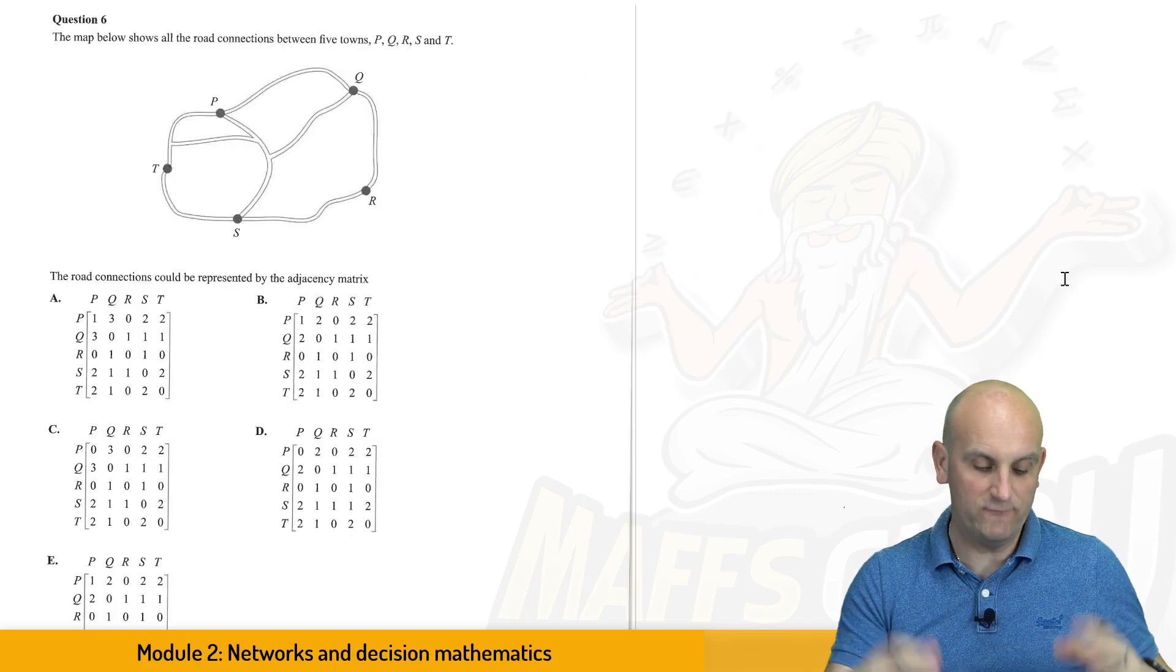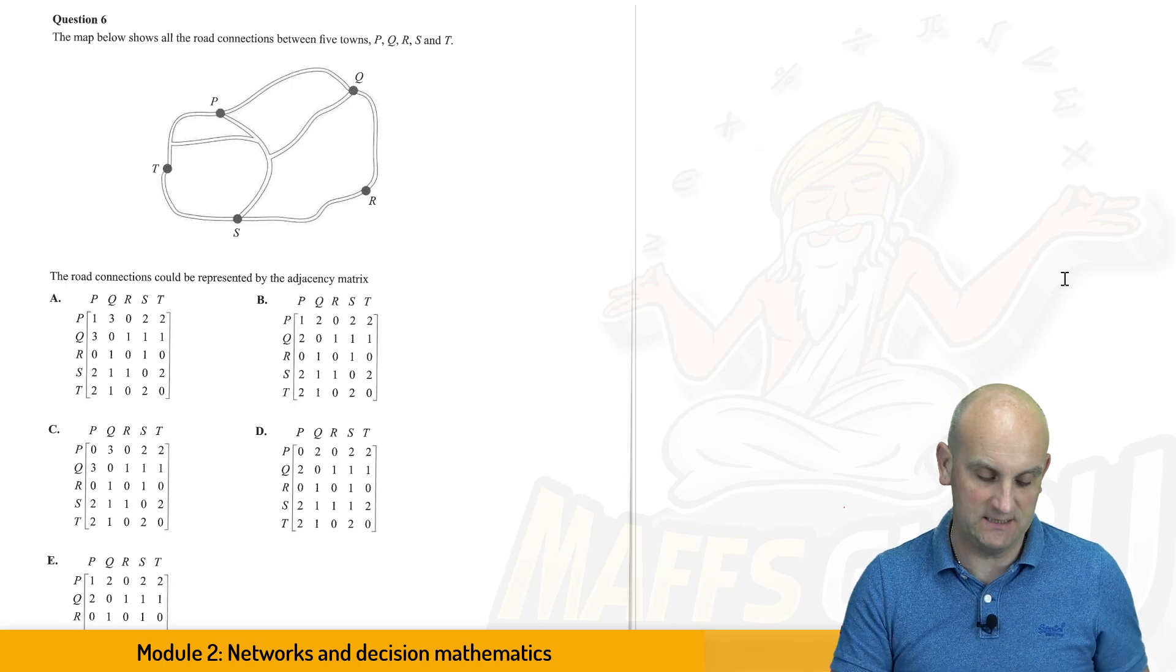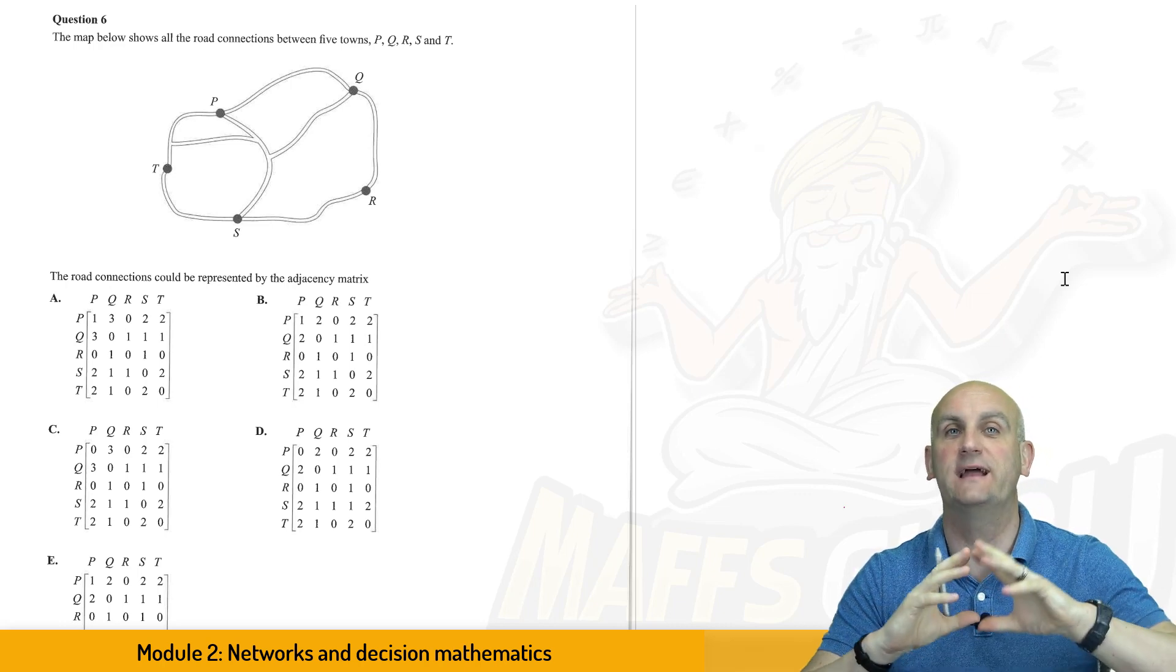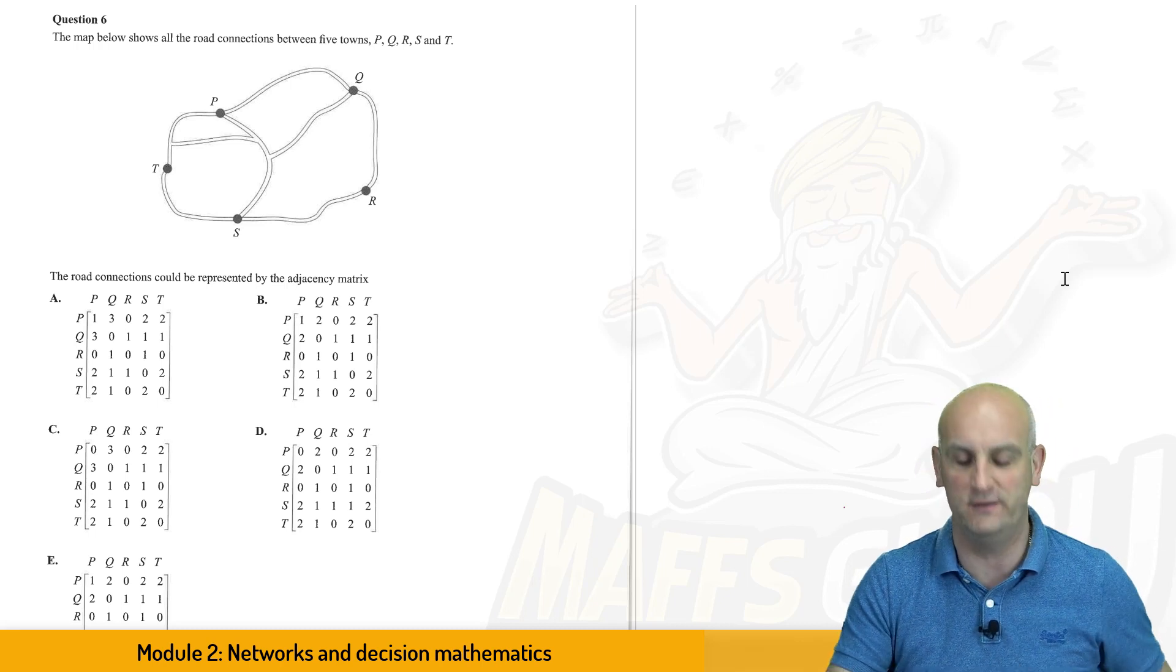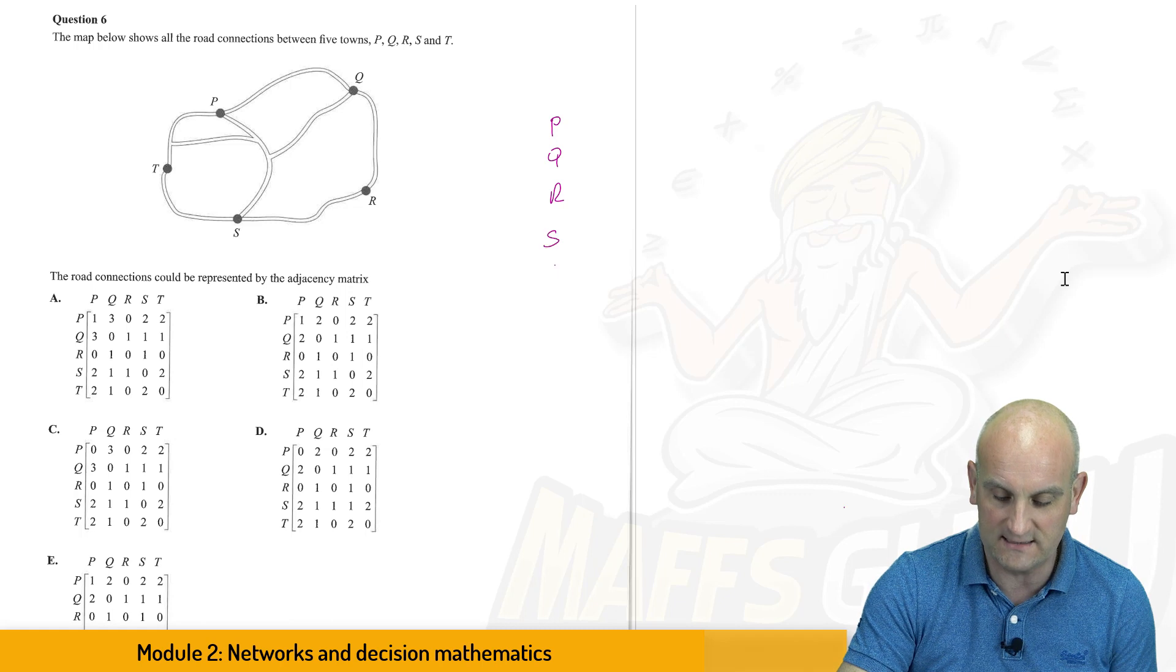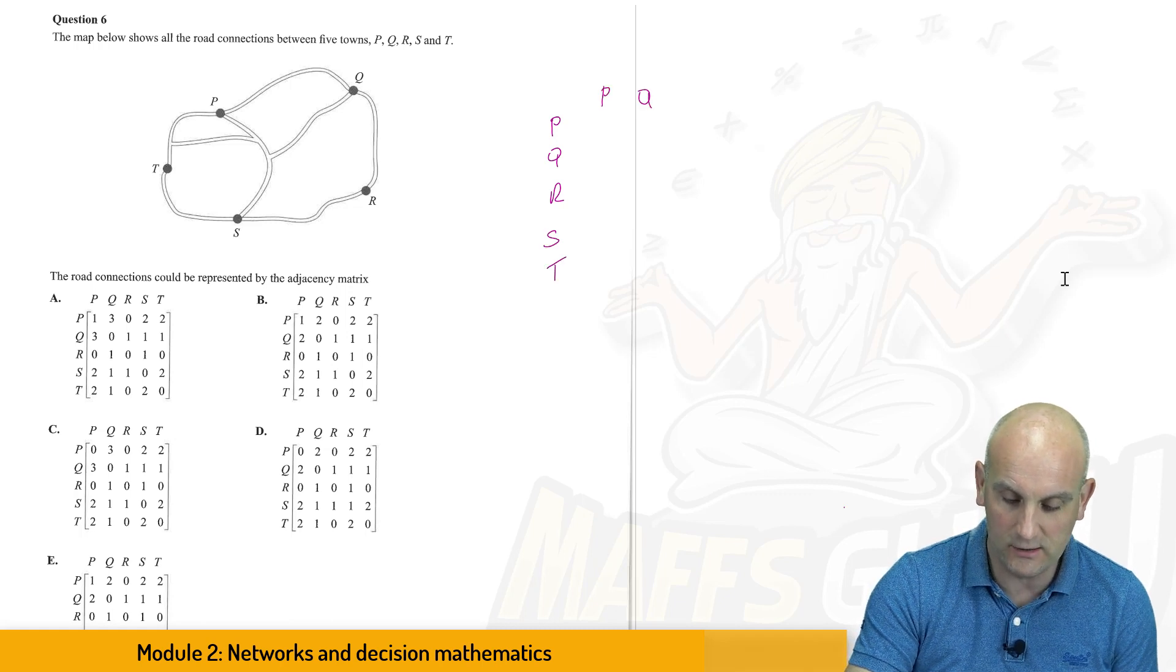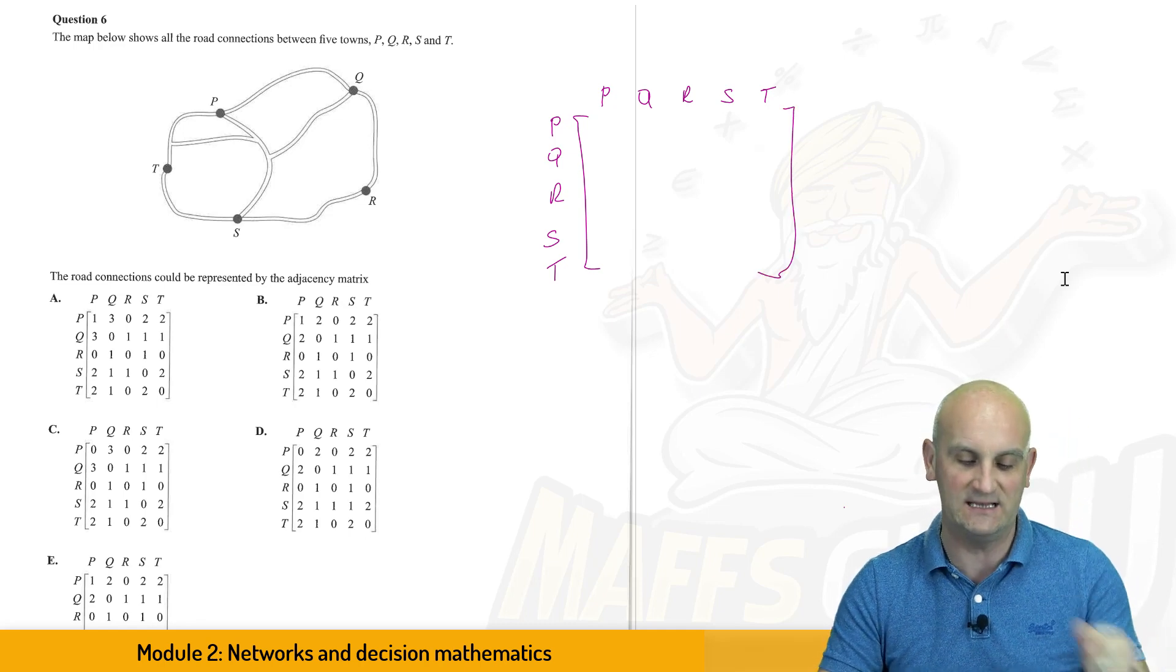Okay, question number six. Now, we've got a lot of here of adjacency matrices. And I have to say, rather than looking at this adjacency matrix, what I'm going to try and do is look and see whether I can build stuff up stage by stage. So I'm going to draw my own adjacency matrix. We've got P, Q, R, S, and T, and P, Q, R, S, and T. Draw some square brackets, not spread brackets. And let's see where we go.